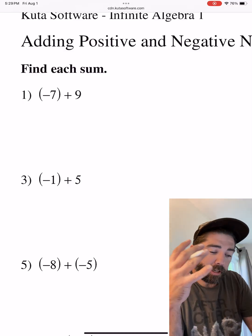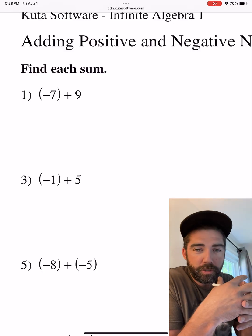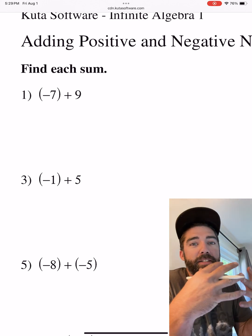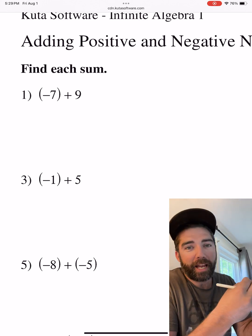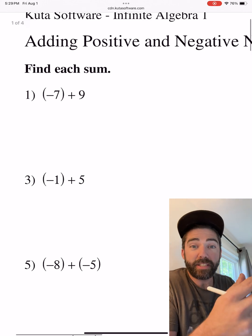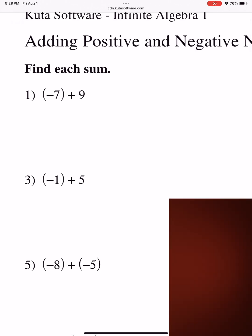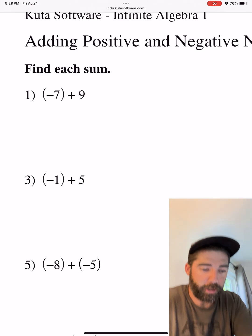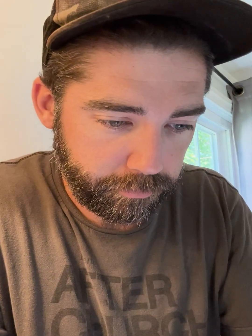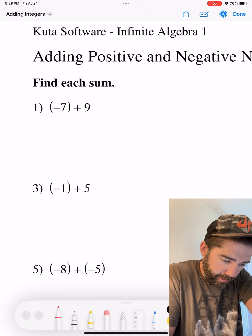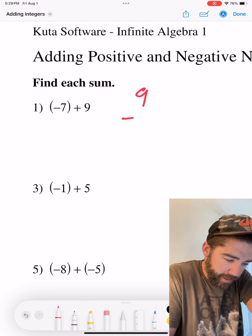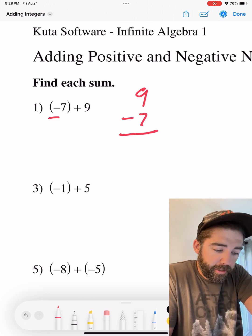Negative 7 plus 9. When we're adding numbers that are different signs, so one's negative, one's positive, simply subtract them. Hello, stop, don't go nowhere. Simply subtract them. We got 9 minus 7. 9 minus 7 is positive 2.